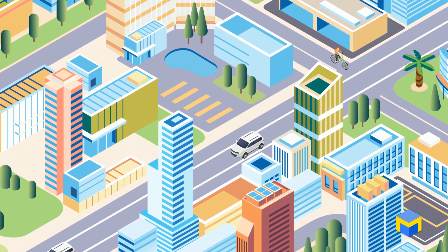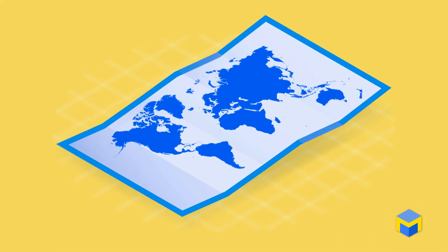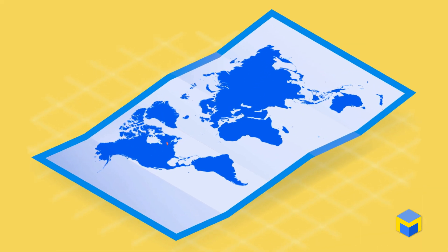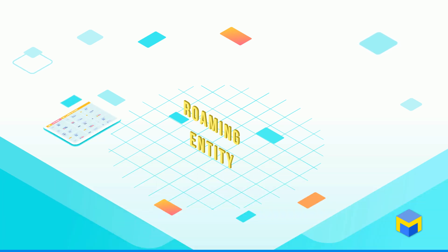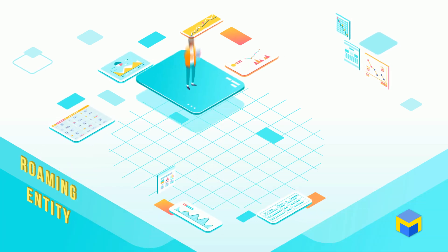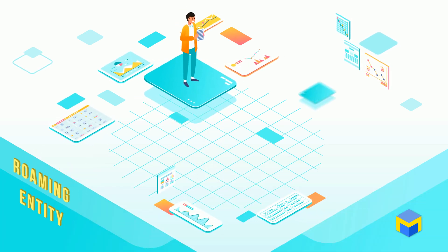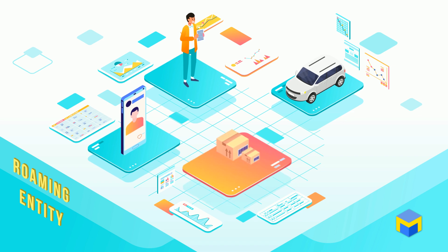A trip is broadly defined as a roaming entity's journey from one place to another. A roaming entity can be almost anything, including a person, a vehicle, a smartphone, or a package.